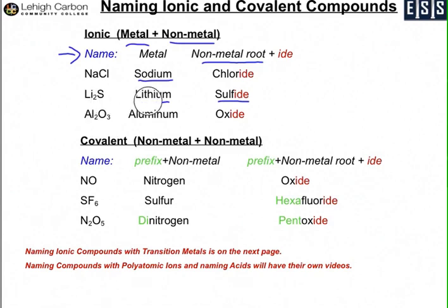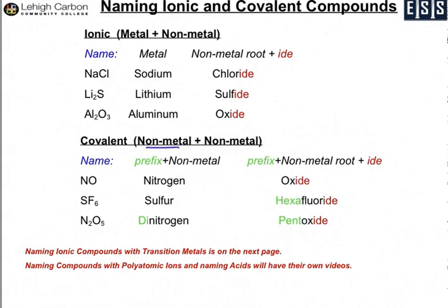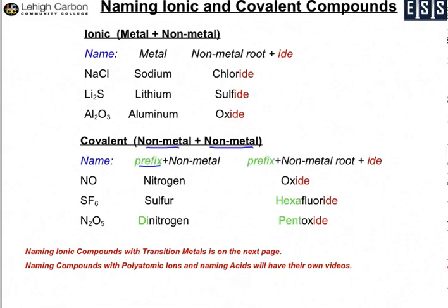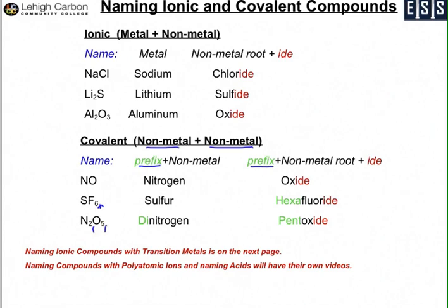When we go to covalent compounds, you do have to address the subscripts in some way. Covalent compounds are non-metals combined with another non-metal. The prefix — shown here in green — is how you address the subscripts in the elements. For SF6 you deal with the six using a prefix, and the prefix can be on either term, the first or the second. With N2O5 we're going to have to prefix both subscripts.